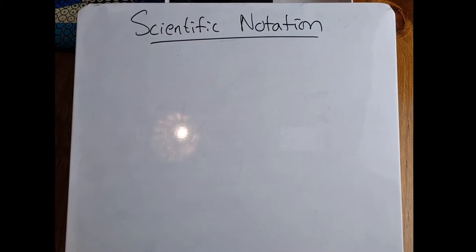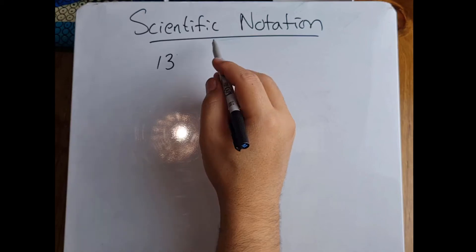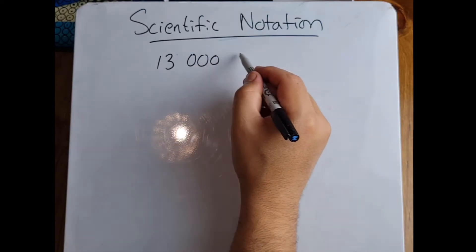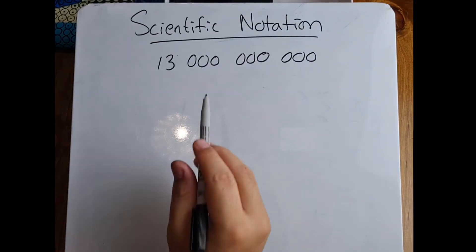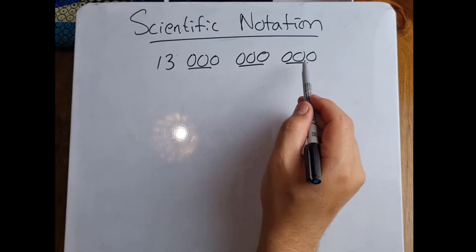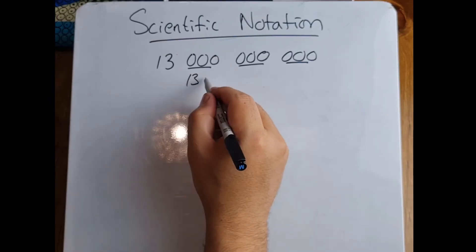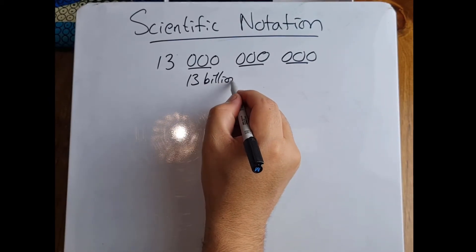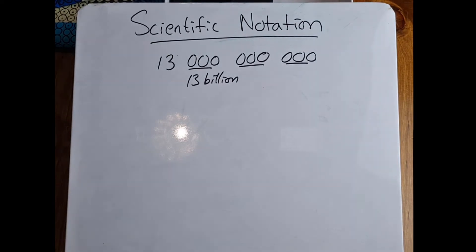So for example, if I've got a number that looks like this. Now first of all, what is that number? Remember, we've got nine zeros, which means it's a billion, which means this is actually 13 billion. But if we don't want to write it like that, we can write it